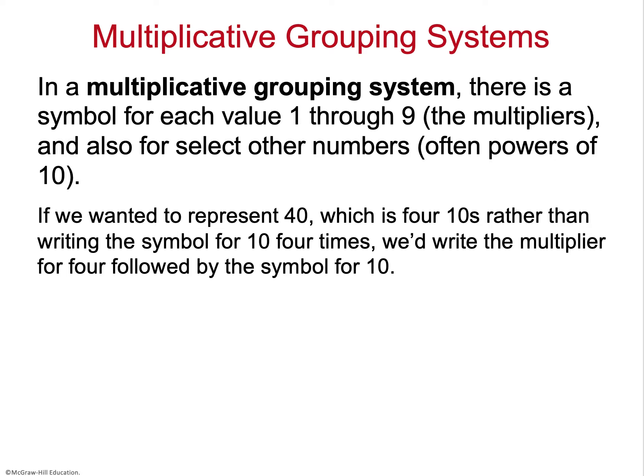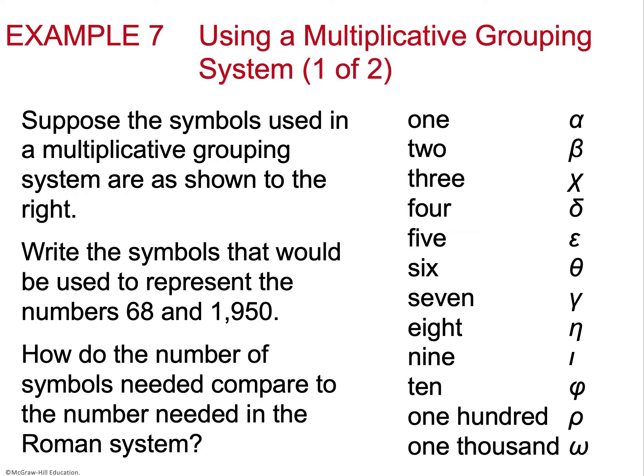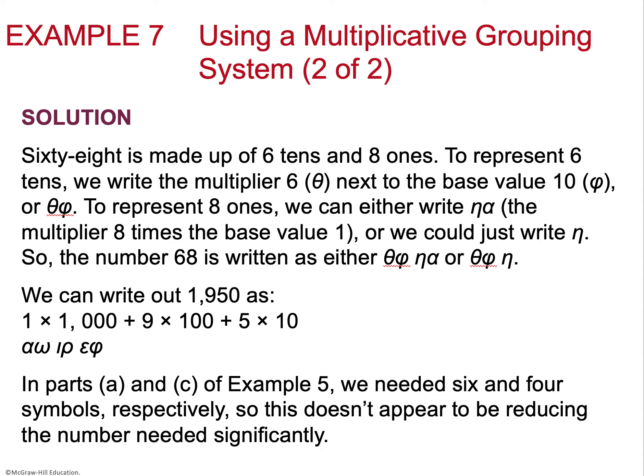In a multiplicative grouping system, there's a symbol for each value from 1 to 9 and also for other select numbers. To represent 40, you write 4 next to the symbol for 10 — implying multiplication. These symbolic number systems do a much better job of teaching place value than simply doing expanded form in English, because this gives a fun and meaningful way to practice it.